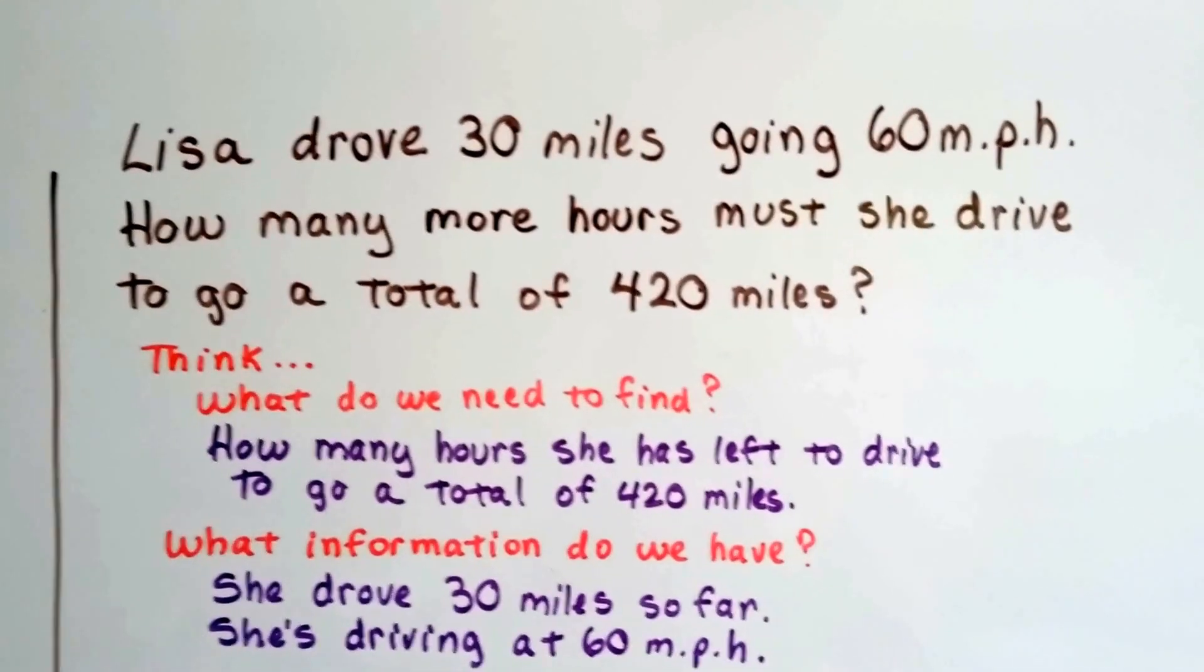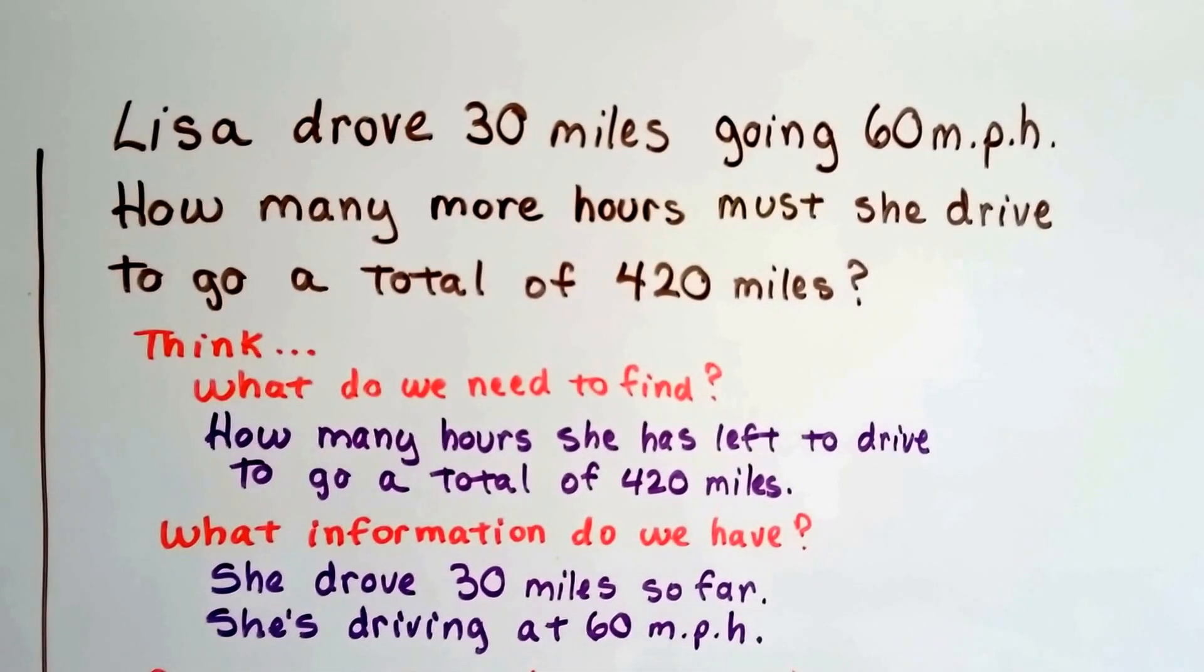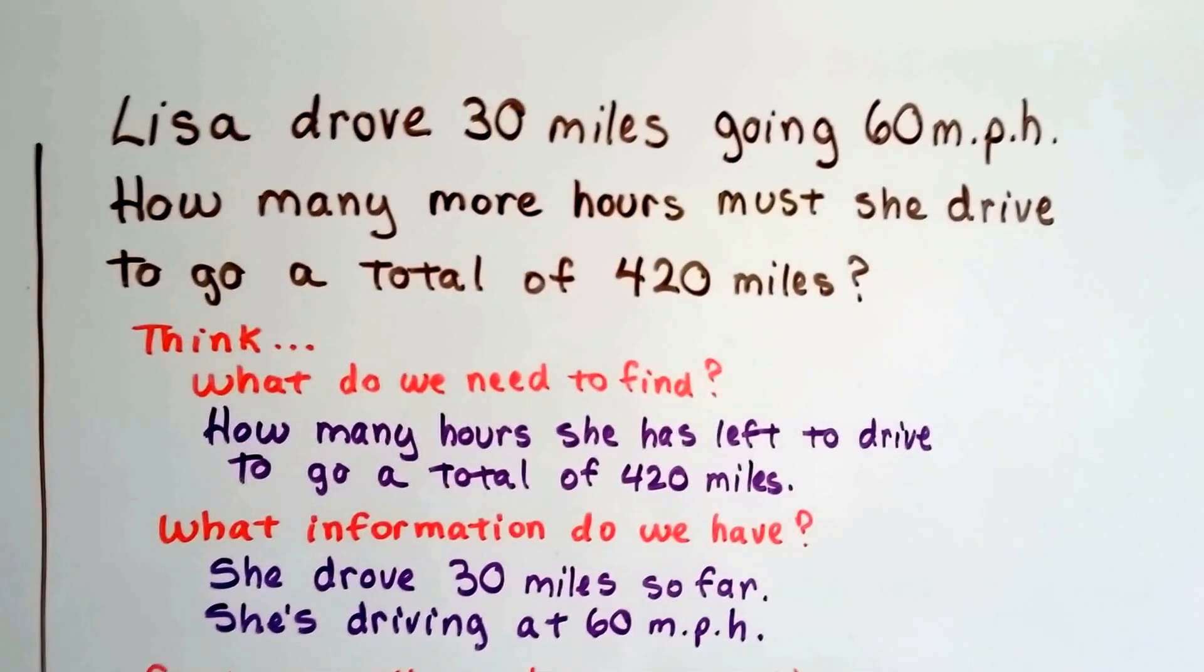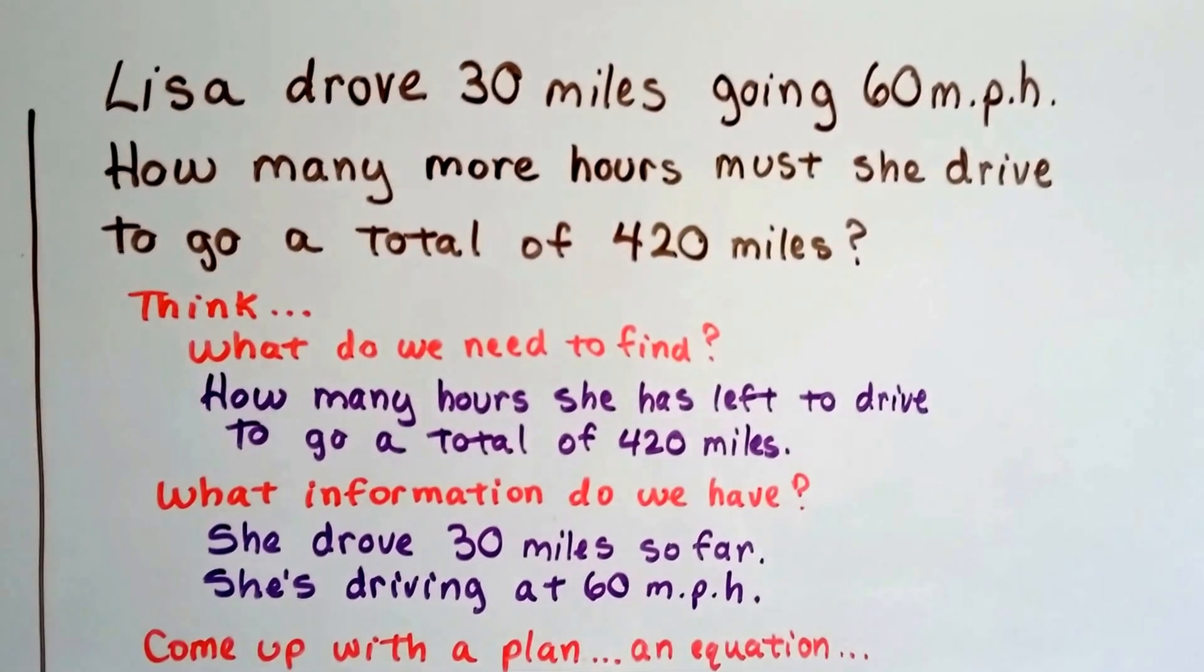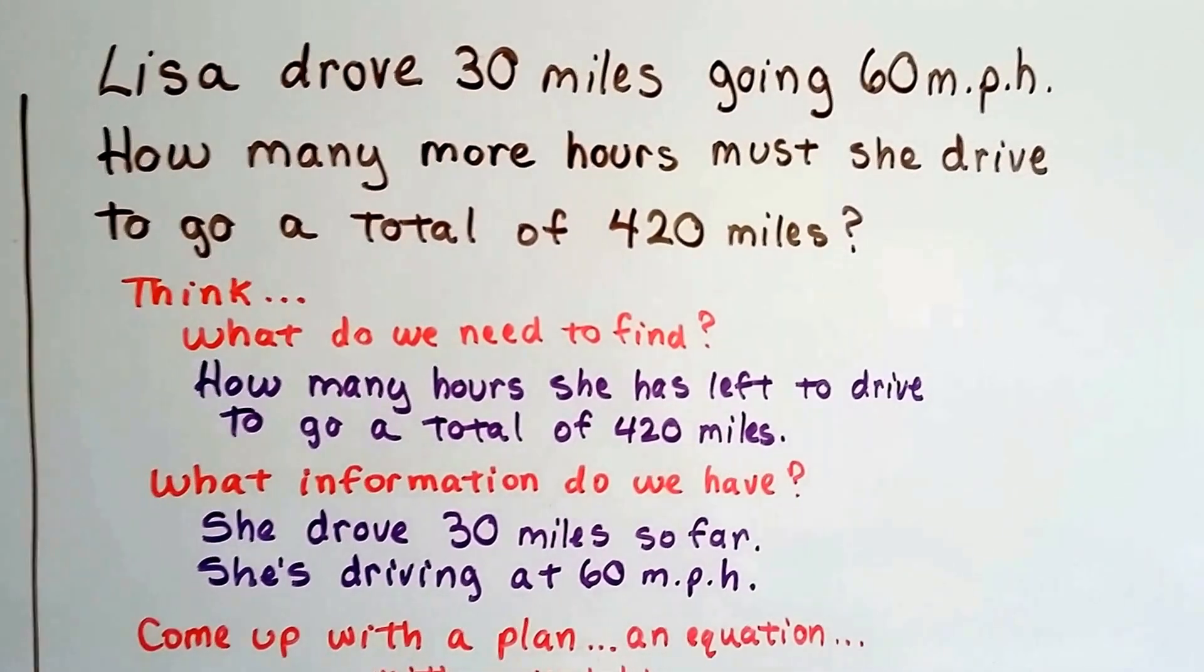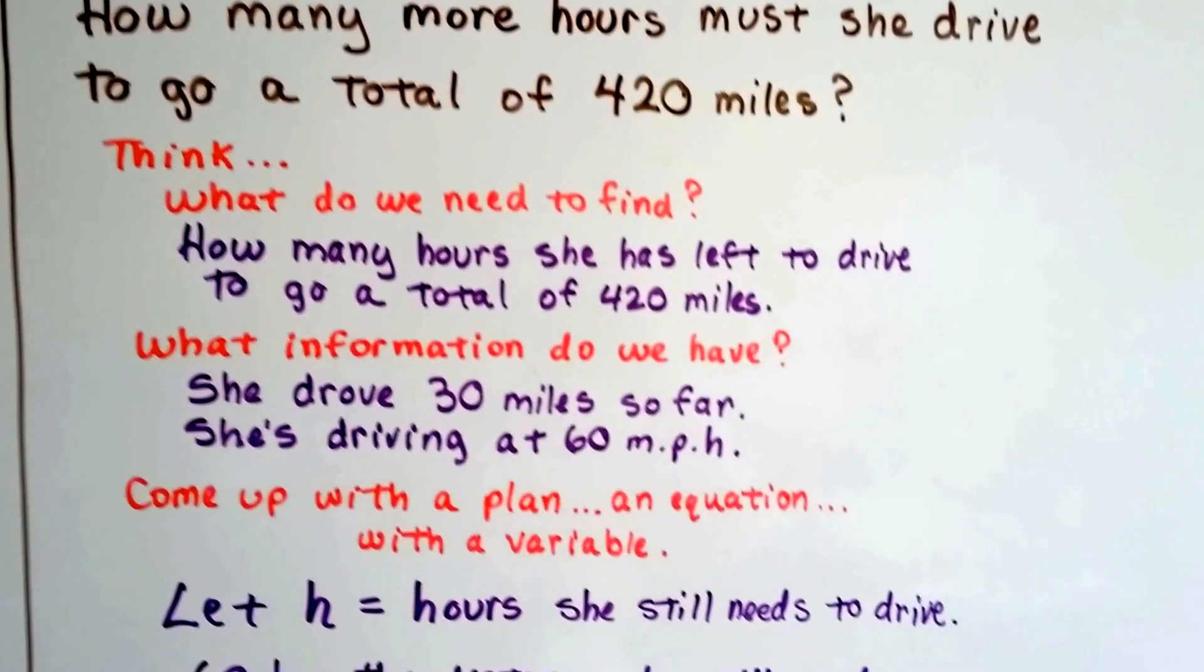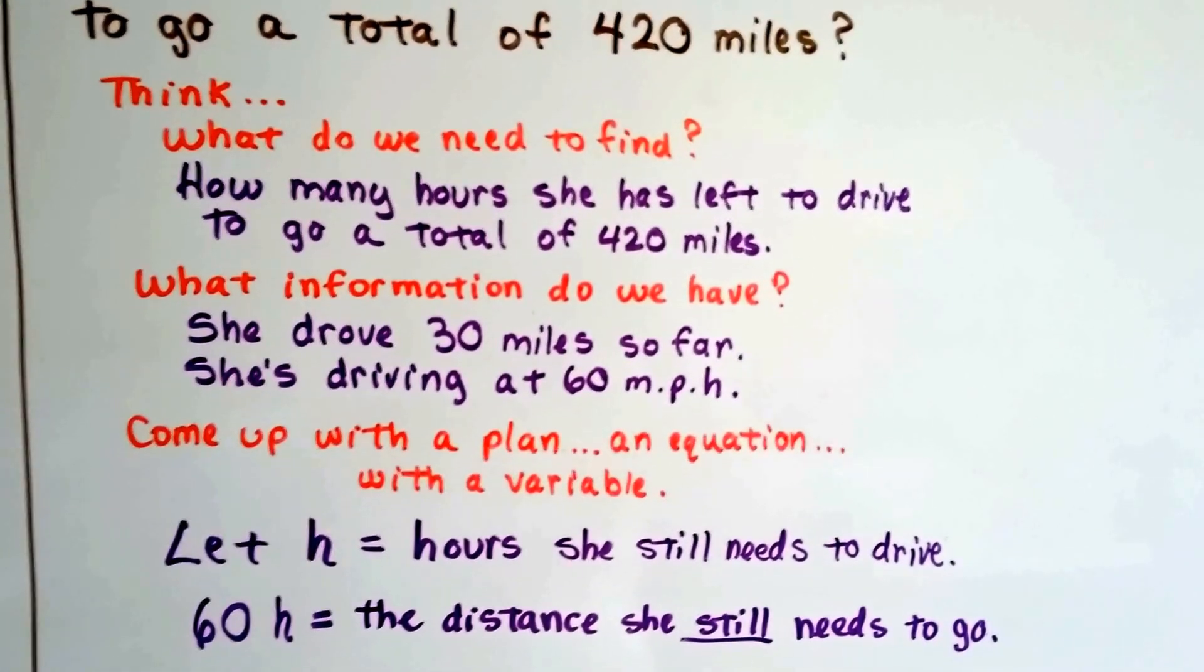Think, what do we need to find? We need to find how many hours she has left to drive to go a total of 420 miles. And what information do we have? Well, so far she drove 30 miles and she's going at 60 miles an hour.